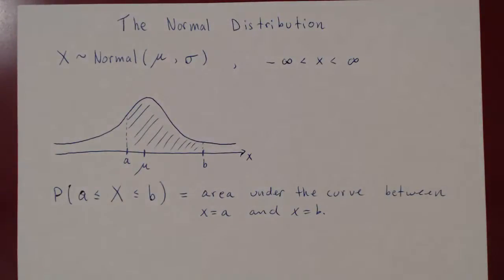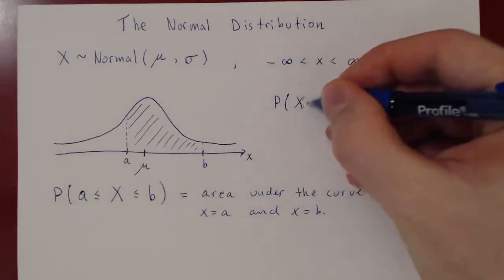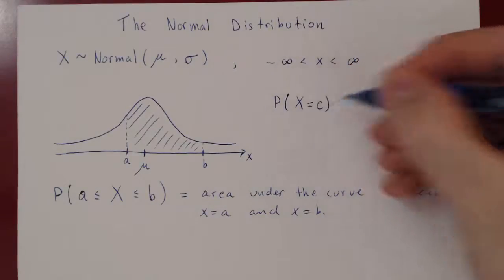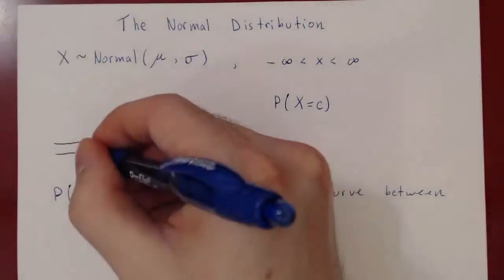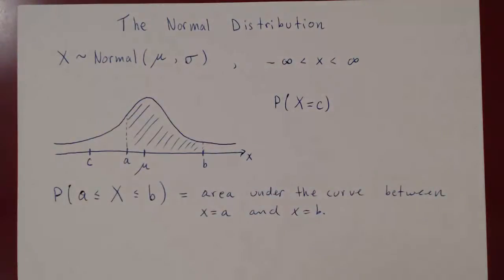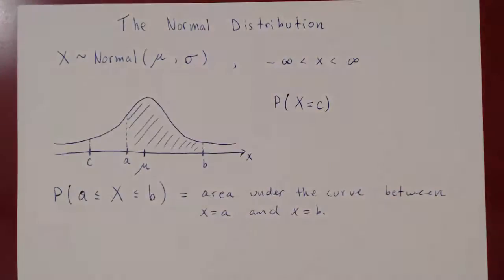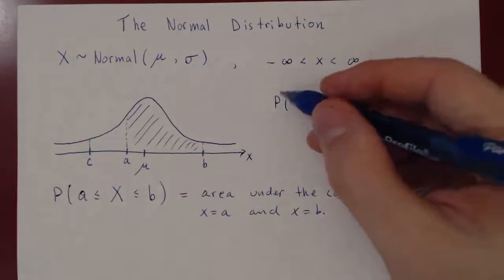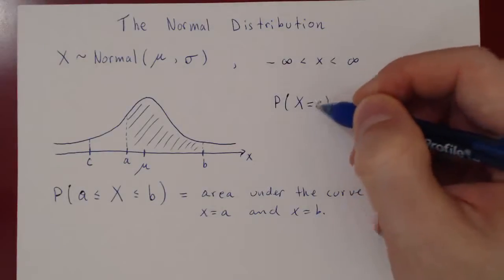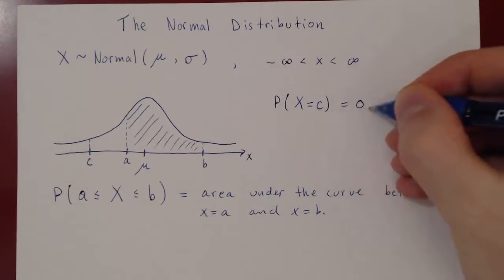It's worth noting: what about the probability that x equals a fixed value c? From c to c, you have no area — all you have is a line, and the area of a line is zero. So the probability that x equals a single value is always equal to zero.